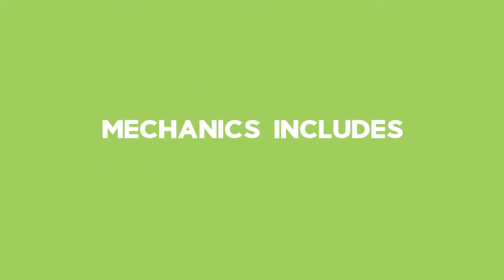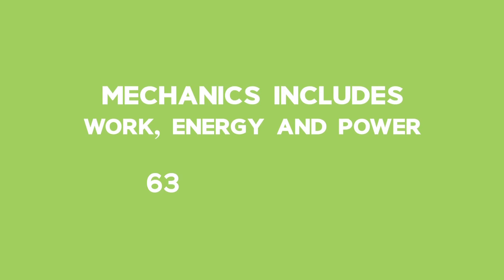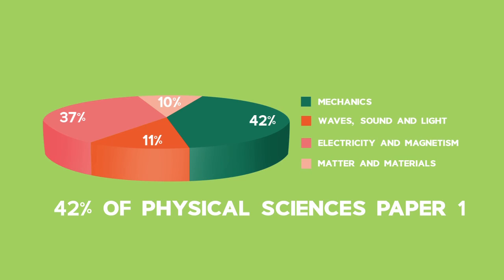Mechanics includes work, energy and power and makes up roughly 63 marks in the final exam, which is 42% of Physical Sciences Paper 1. Although there are other sections such as vertical projectile motion and also momentum and impulse included in these marks.